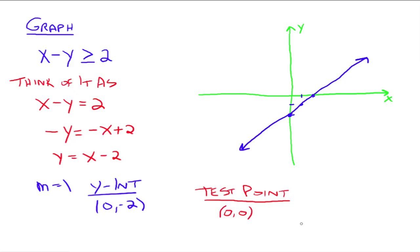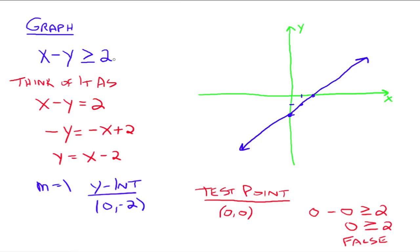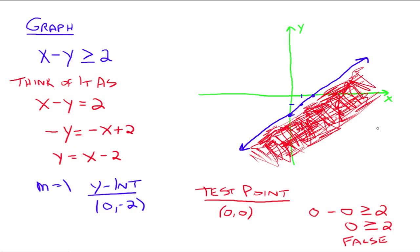We plug the test point into our original inequality: 0 minus 0 is greater than or equal to 2, so 0 is greater than or equal to 2. That's false. So any point on the same side of the line as the origin will make the inequality false. Which means on the other side of the line, any point will make the inequality true. We want to shade the true side — that would be below the line.